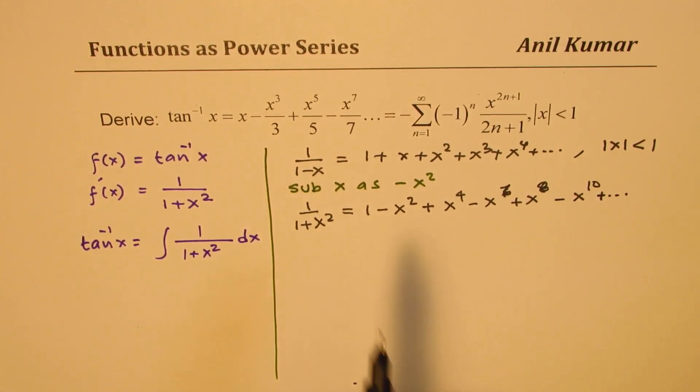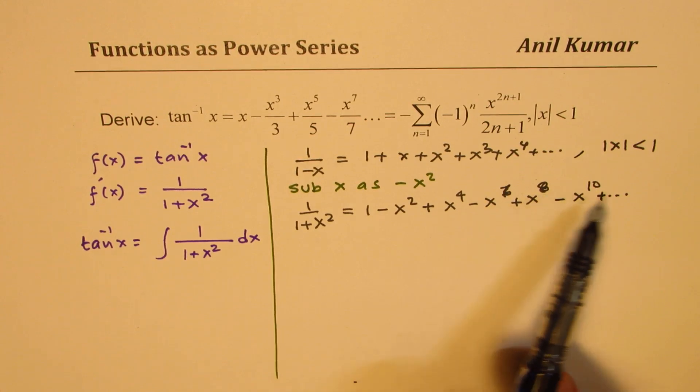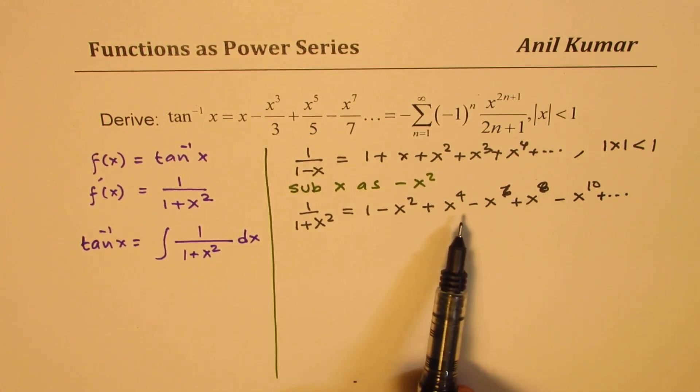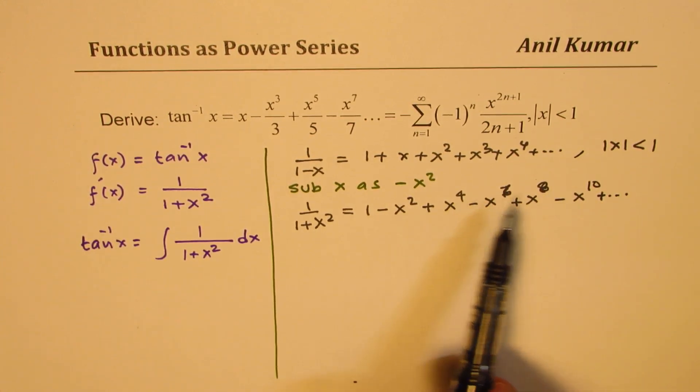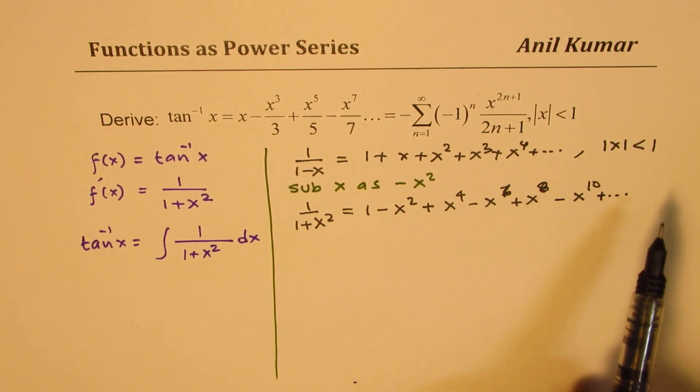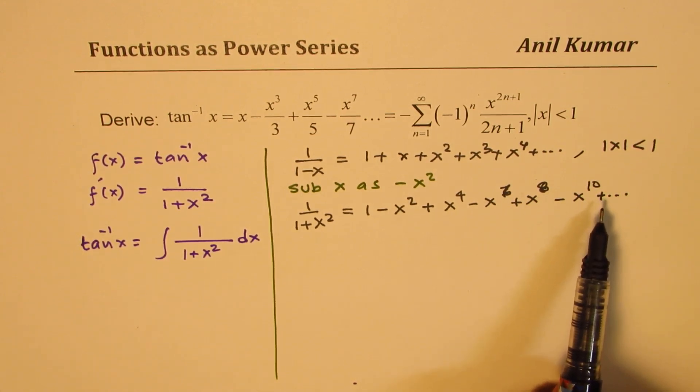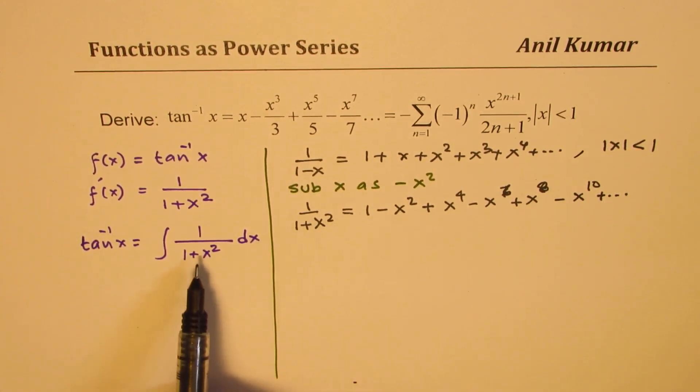So let me write one more: x to the power of 10 plus and so on. So that is how this series is going to be. You'll have powers as two, four, six, eight, ten where the powers of four, eight, twelve will be positive coefficients.